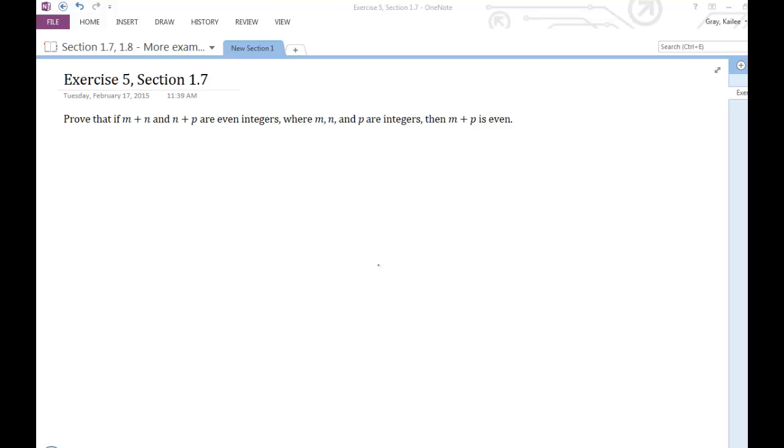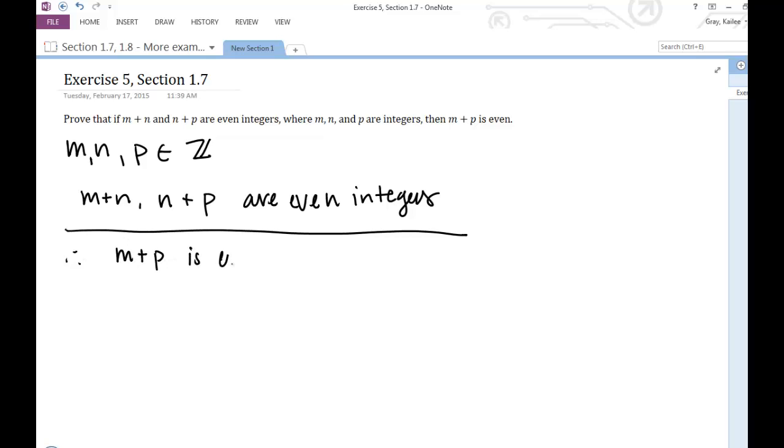The first thing I'm going to do is just write out this statement in some different ways. Trying to prove that if m plus n and n plus p are even integers, where m, n, and p are integers, then m plus p is even. So let me just write down this info. So I know that m, n, and p are integers. I know that m plus n and n plus p are even integers. And I'm trying to show that with those two pieces of information, I can prove that m plus p is even.